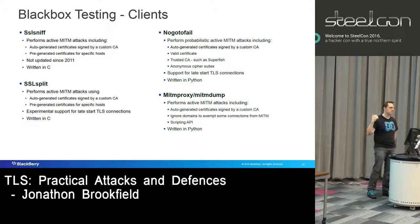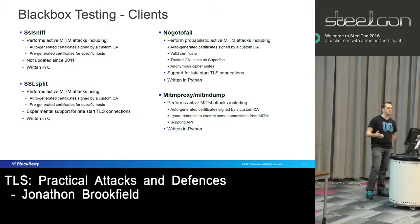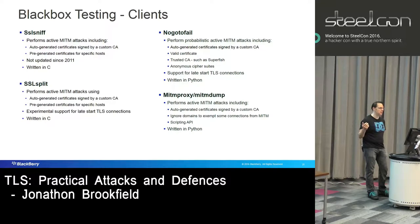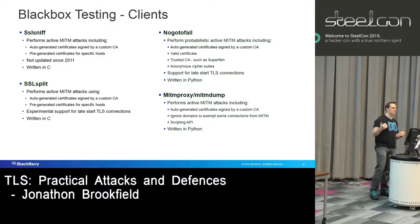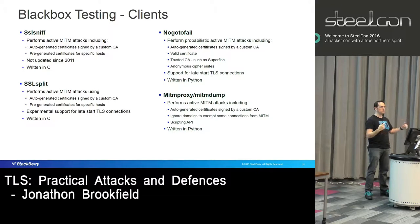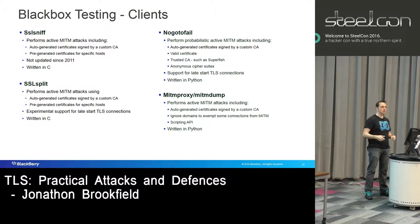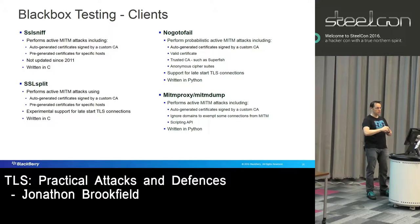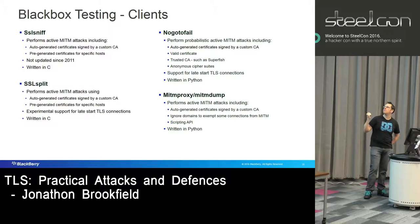SSL sniff was originally written in 2002 by Moxie Marlinspike. This will perform active man-in-the-middle attacks — you set it up on a Linux box with traffic flowing through it and it will automatically generate server certificates using a fake CA. You can use this to intercept targeted attacks on particular hosts or generically all hosts. Unfortunately it hasn't been updated since 2011 and does have a couple of bugs.